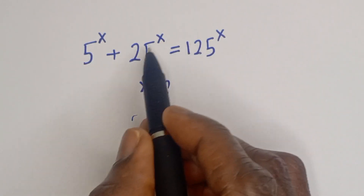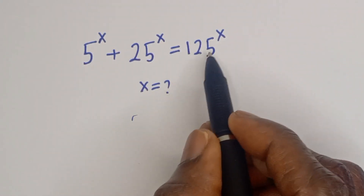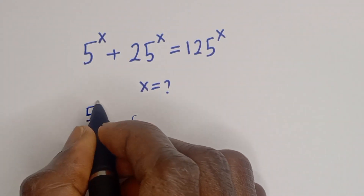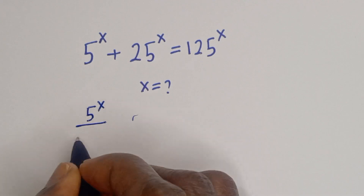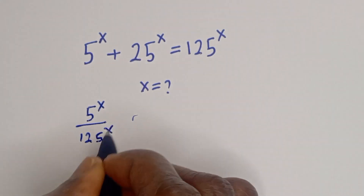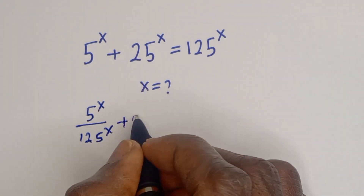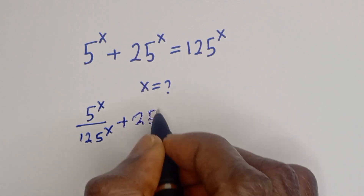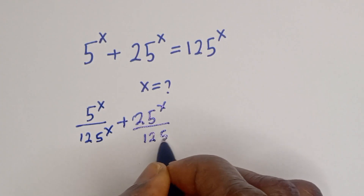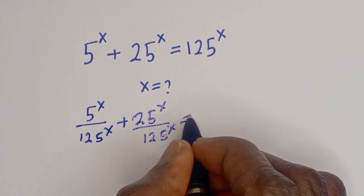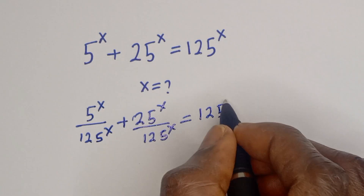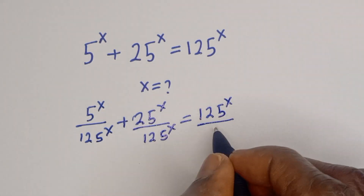Here we can see that if we divide both sides of this equation by 125 to the power of x, we get: 5 to the power of s divided by 125 to the power of s, plus 25 to the power of s divided by 125 to the power of s, is equal to 125 to the power of s divided by 125 to the power of x.